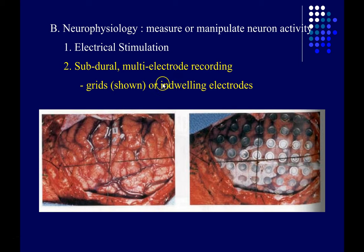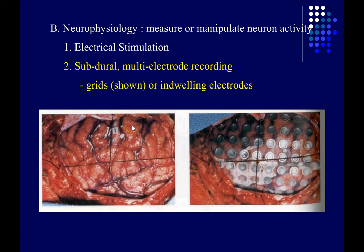One way this is done is using subdural micro-electrode recording — tiny pieces of metal embedded in a plastic sheet that's implanted underneath the dura mater, right on the surface of the cortex. This is done in human patients who are getting ready to undergo surgery to relieve their epilepsy. For certain types of epilepsy, the seizure only starts in one part of the brain, and if the patient isn't responding well to medication, sometimes the best course of action is to cut out the small chunk of brain tissue that's always generating the seizures.